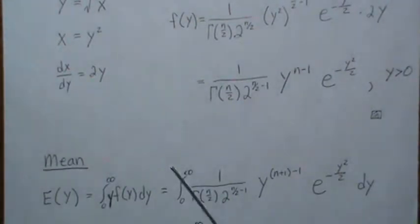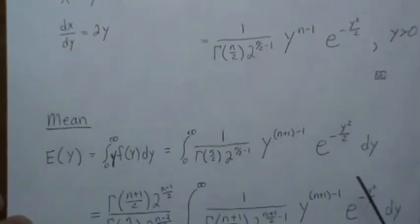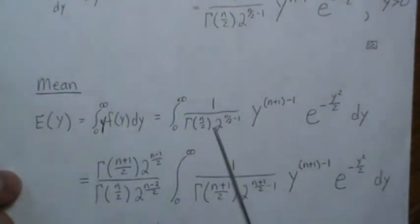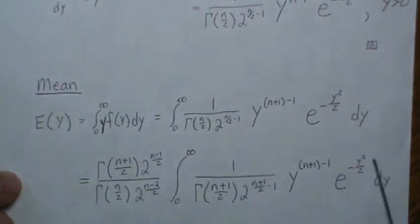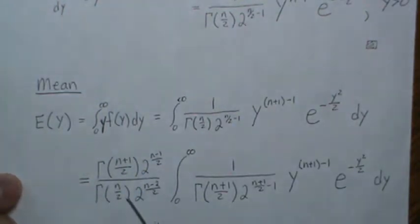We divide and multiply by the appropriate constants, and the integral integrates to one. These come out front, and then we multiply and divide by the same constant. This creates another chi distribution which integrates to one, so whatever is left over is the mean.